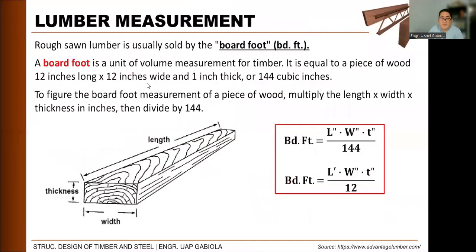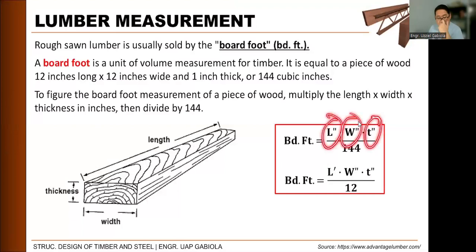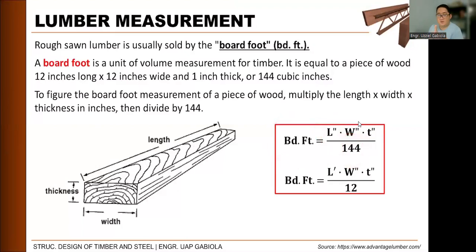Next is lumber measurement. When estimating the cost of lumber, we use the unit called board foot. A board foot is a unit of volume equal to a piece of wood 12 inches long, 12 inches wide, and 1 inch thick — a total of 144 cubic inches. To get board feet when dimensions are in inches, divide the volume by 144. If the length is in feet, divide by 12 instead.